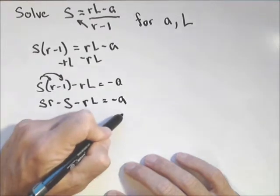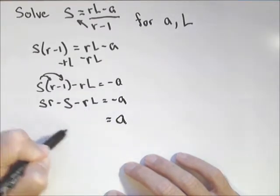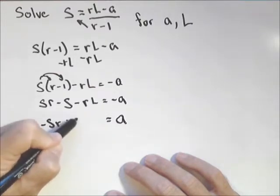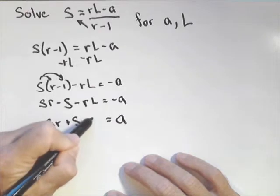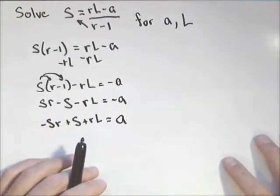We were asked to solve for A, not negative A. So I'm gonna multiply both sides by a negative one, which swaps all my signs. So I have negative SR plus S plus r L is equal to A. We can write them in whatever order we want.